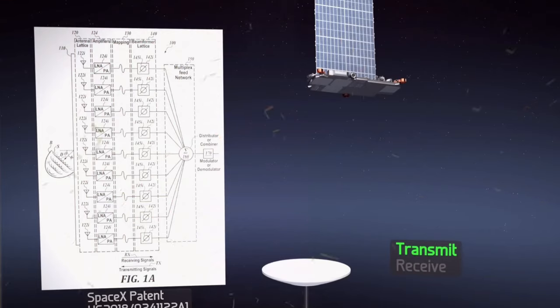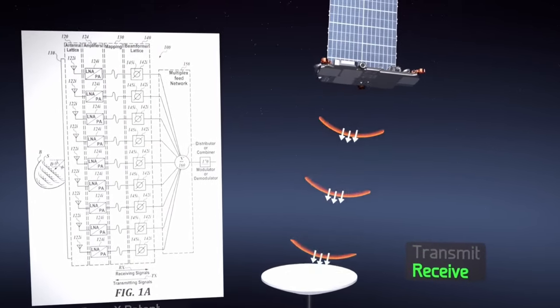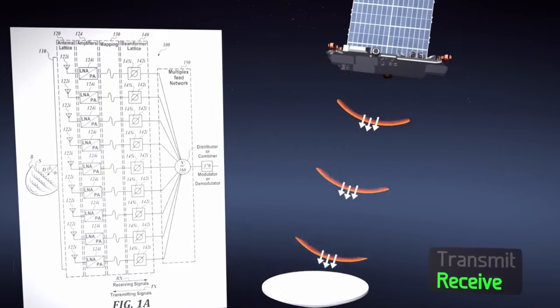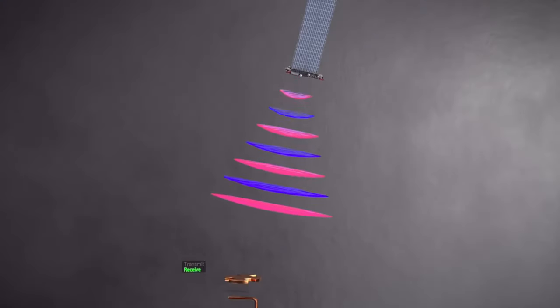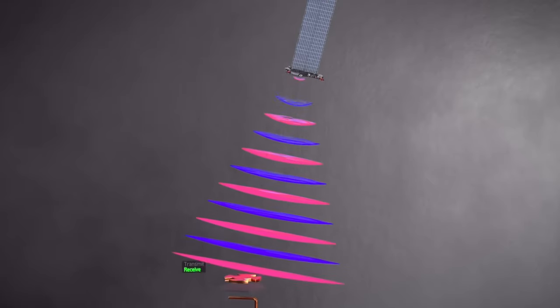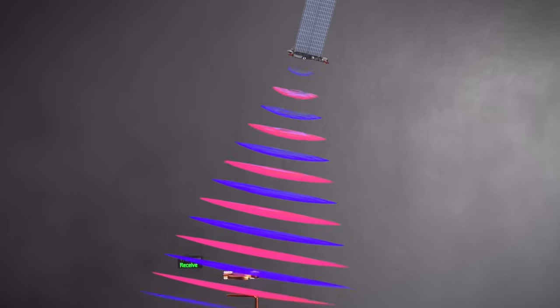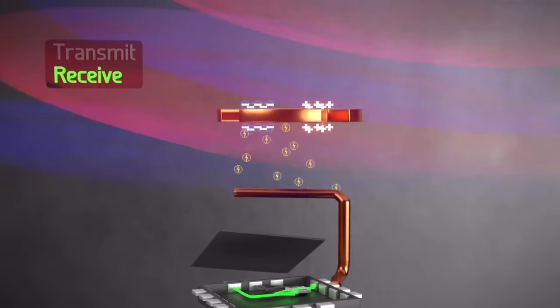Secondly, although this video focuses on Dishy transmitting waves, satellites primarily operate in receive mode. Nonetheless, the process of receiving electromagnetic waves mirrors that of transmitting them, albeit in reverse.